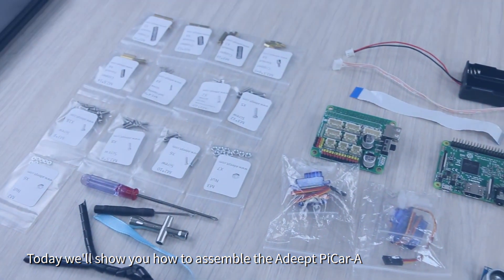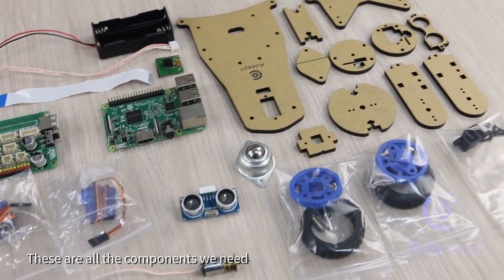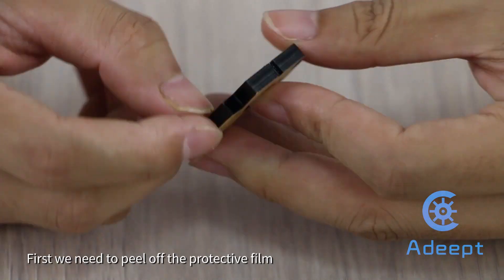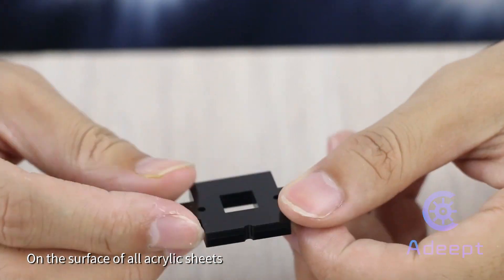Today we will show you how to assemble the Adeept Pi-Car A. These are all the components we need. First we need to peel off the protective film on the surface of all acrylic sheets.